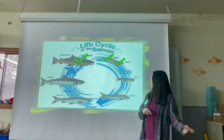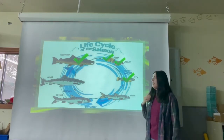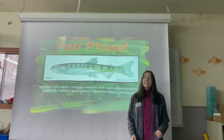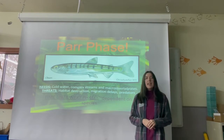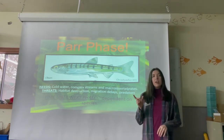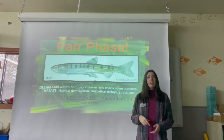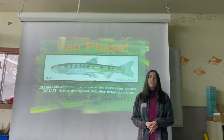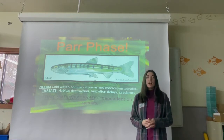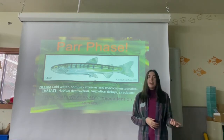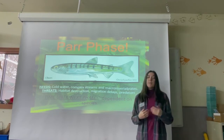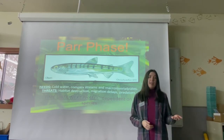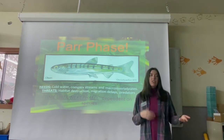Now that we've covered the fry phase, let's move on to the parr phase. You can see an example of a chum parr on screen. They're still only a couple inches long — a little bit longer than fry, but still pretty small. They're in the same habitat as fry, so they have the same needs and threats: cold water and macroinvertebrates, and concerns about habitat destruction and predators. How long they stay in this phase depends on the species — a pink salmon may spend less time in the parr phase than a chinook salmon.